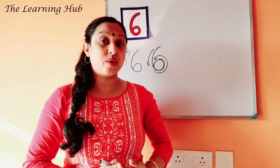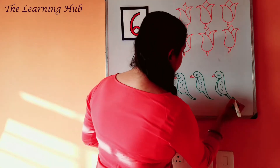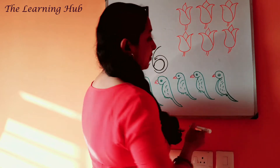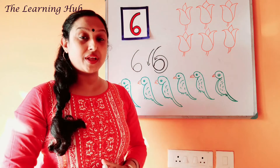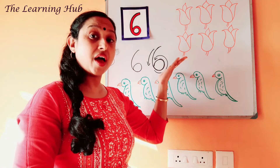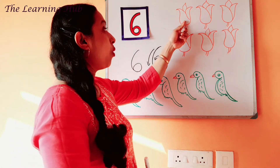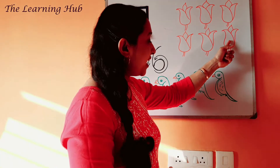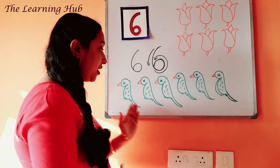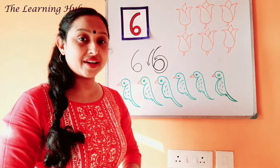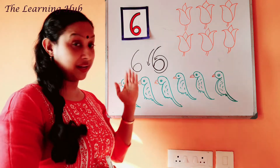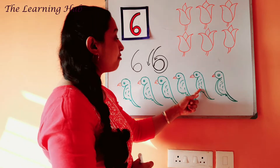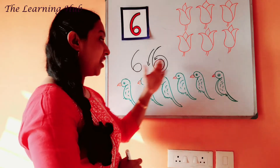Now we'll count some pictures — let me draw some. Let's count the pictures. What are these? These are flowers. How many flowers are there? Let's count: one, two, three, four, five, six. There are six flowers. And what are these? These are petals. Let's count: one, two, three, four, five, six. There are six petals.